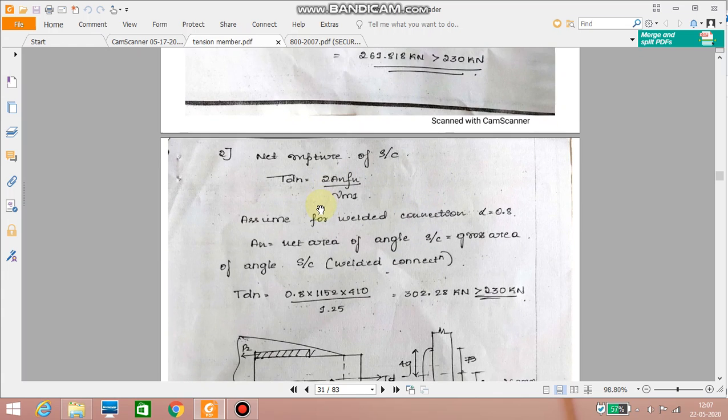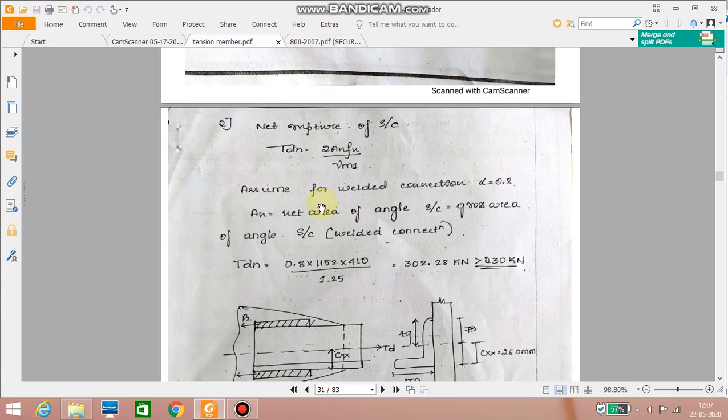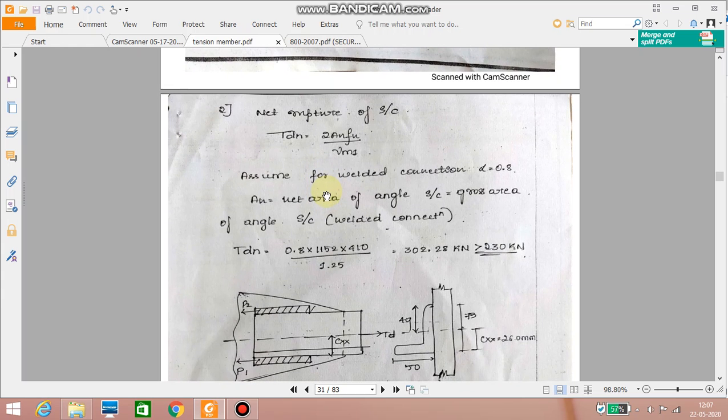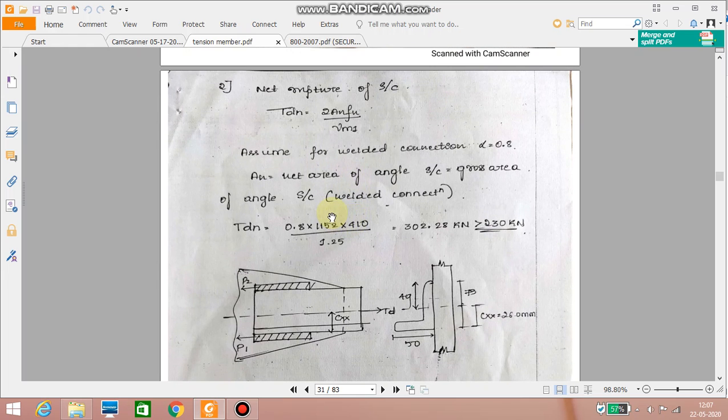Now the net section rupture we will see. The strength in net section rupture Tdn equal to Alpha into An into Fu divided by gamma M1. So they have given it is welded connection. There is nothing to assume. So Alpha equal to 0.8. So what is the value of An? It is a welded connection. So whatever the gross area is there it itself is a net area.